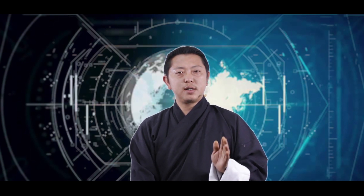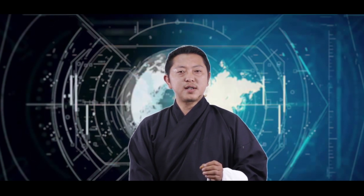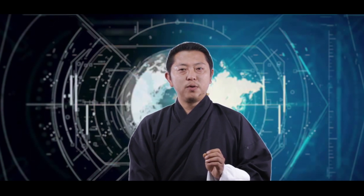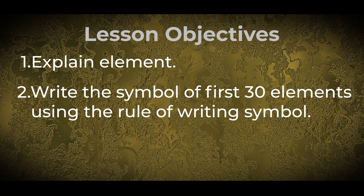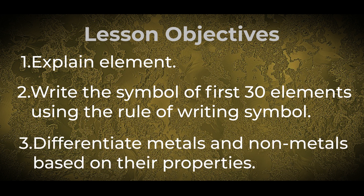Before we move on to learning about metals, non-metals, elements and their symbols, it is important for us to understand what we are supposed to achieve by the end of our lesson today. Let us look at the lesson objectives. Number 1: by the end of this lesson, we should be able to explain elements. Number 2: we should be able to write the symbols of the first 30 elements using the rules of writing symbols. Number 3: we should be able to differentiate metals and non-metals based on their properties.